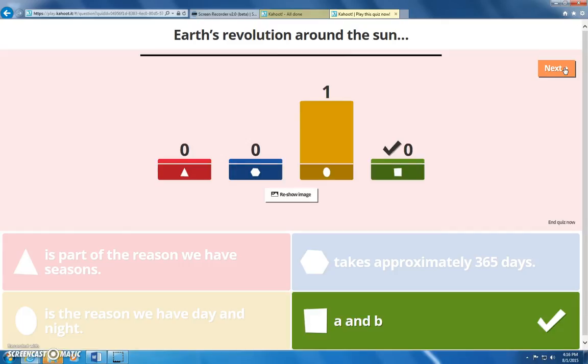No, it is not the reason we have day and night. When earth revolves around the sun, it's the reason why we have seasons and it takes about 365 days.